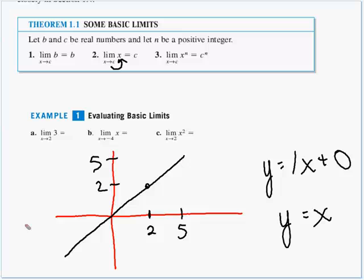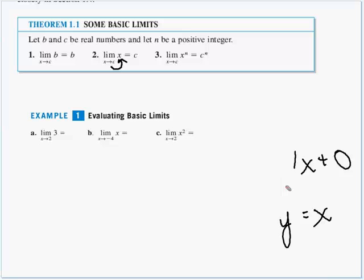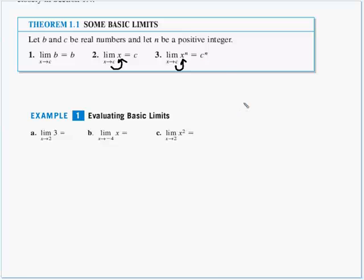It also works if the variable is the base of an exponential. The limit as x approaches c of x to the nth power — again, x is approaching c, so the first attempt should be to plug c in for x, giving us c to the nth power.